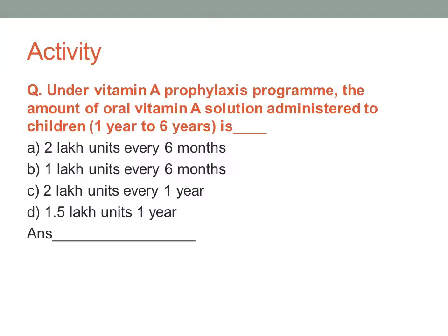Activity question: Under the Vitamin A Prophylaxis Program, the amount of oral vitamin A solution administered to children aged 1 to 6 years is — option A: 2 lakh units every 6 months, option B: 1 lakh units every 6 months, option C: 2 lakh units every 1 year, option D: 1.5 lakh units every 1 year. The correct answer is option A — 2 lakh international units every 6 months. The answer to the previous question is option D — increased risk of mortality.